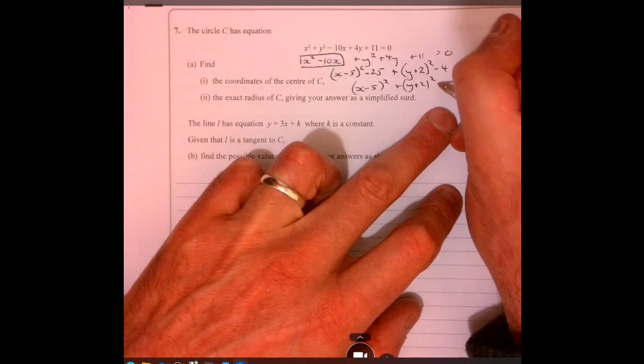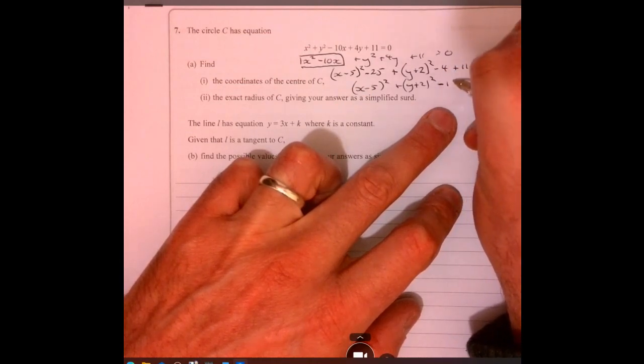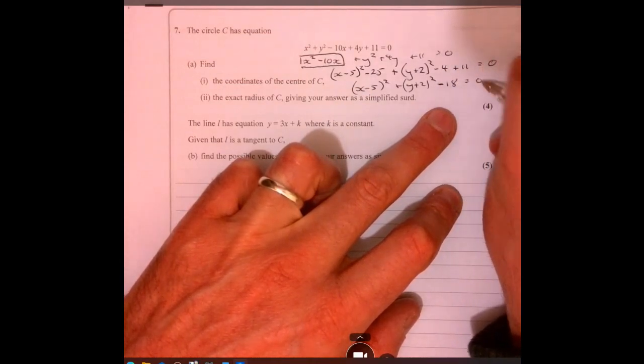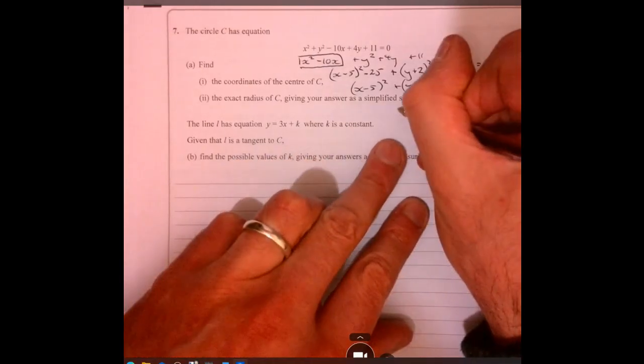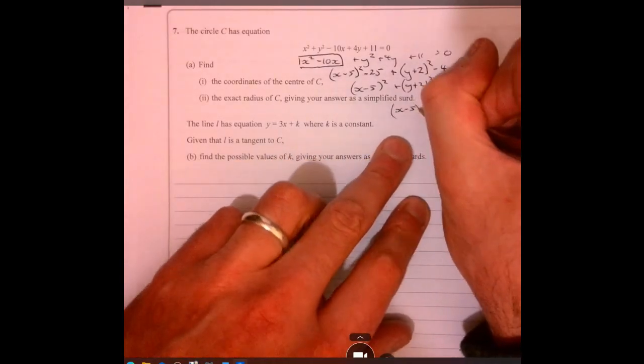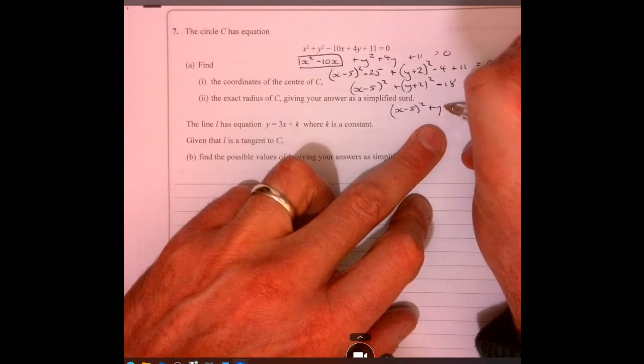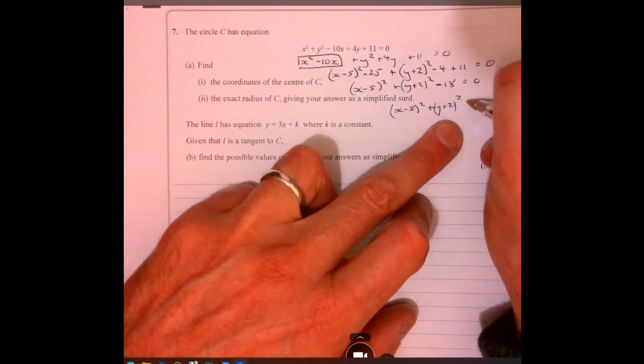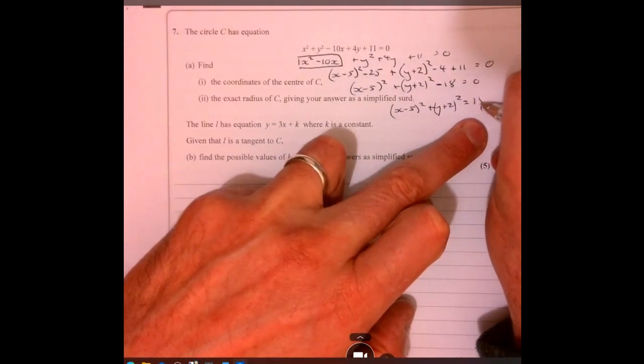That gives us minus 18, which equals 0. Add the 18 to both sides, so x minus 5 squared plus y plus 2 squared equals 18.